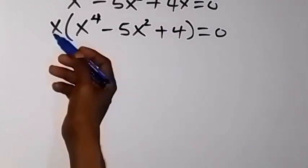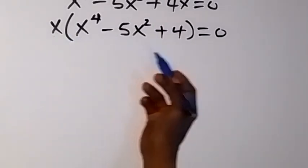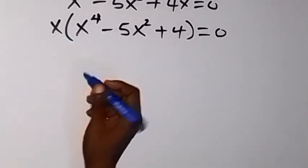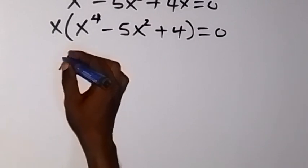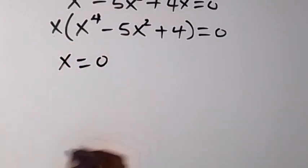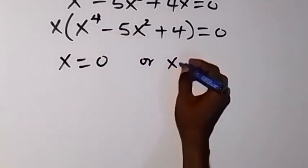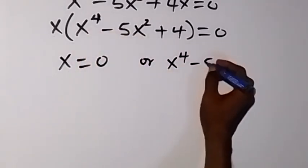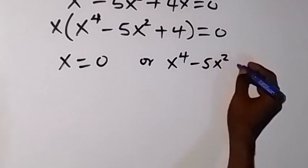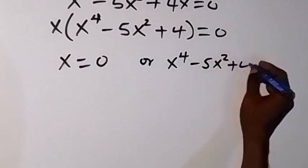So here we have two products. Product of two numbers equals 0. So we can see the first one x = 0, or we have the second one x⁴ - 5x² + 4 = 0.